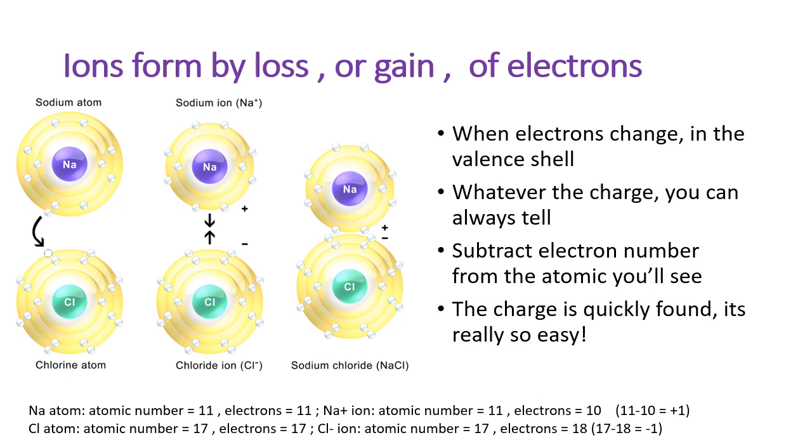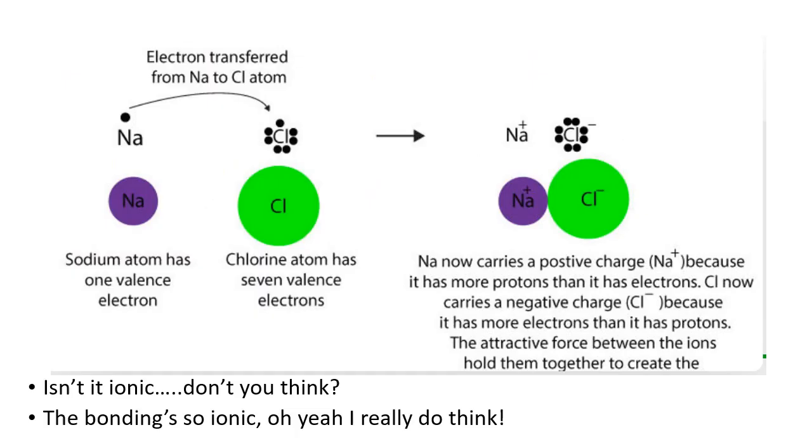When electrons change in the valence shell, whatever the charge, you can always tell. Subtract electron number from the atomic, you'll see the charge is quickly found. It's really so easy.